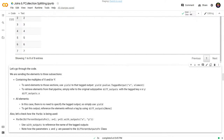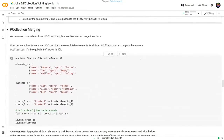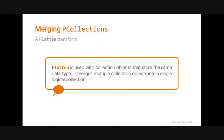Any more questions before we move to the merging P-collections part? Let's look at merging P-collection use cases. One of the ways is to use the Flatten transform, another core transform of Apache Beam. Flatten merges multiple input P-collections with elements of the same data type into a single P-collection. In this diagram, we have three P-collections of shapes and the Flatten transform simply merges the elements to create another P-collection containing all of them as output.